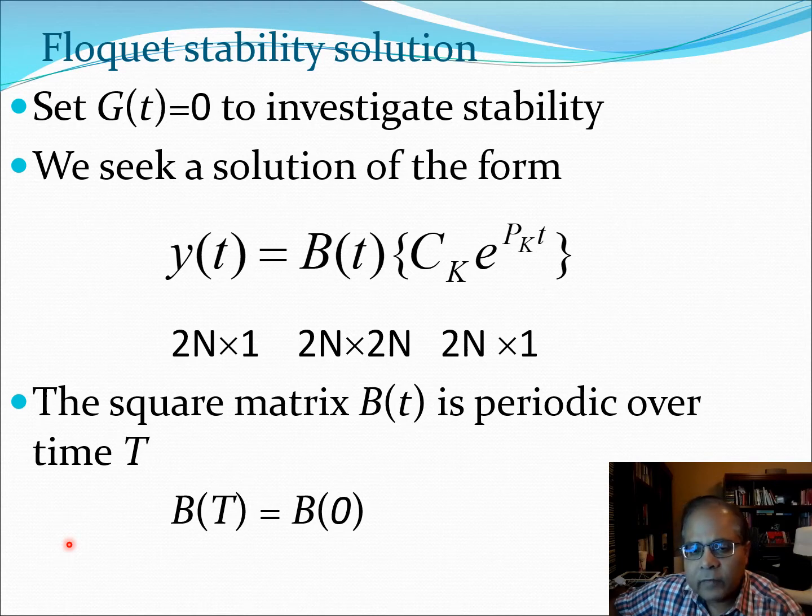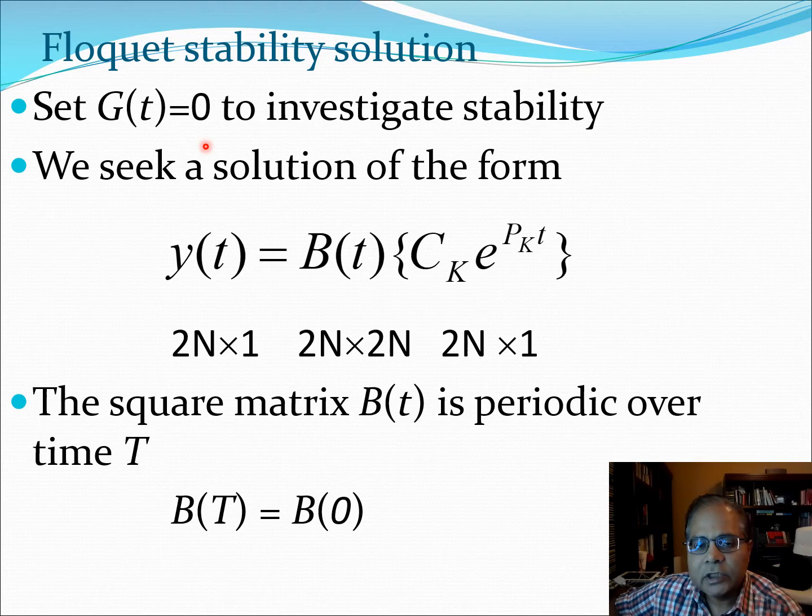Now when we want to investigate stability, I have previously explained that we can set the forcing term to zero. So essentially what we do is that we set G(t) equal to zero when we are looking for stability. And we also seek a solution of the following form: Y(t) is B(t) C_K e^(P_K t).